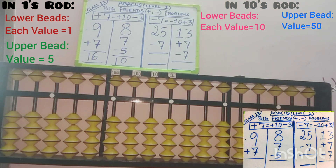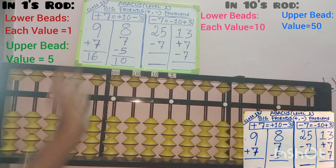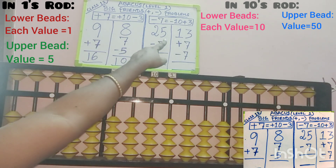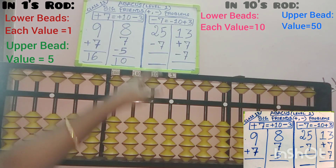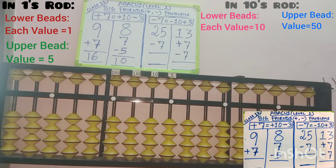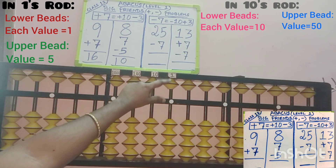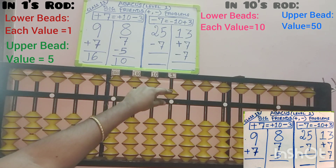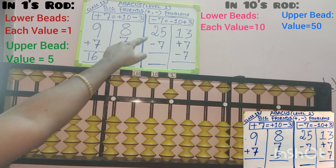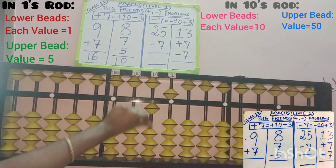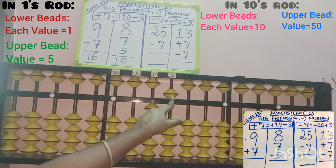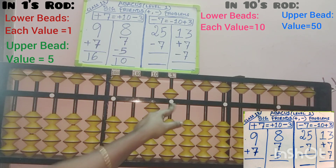Next, we will move to the subtraction part. Third sum is 25 minus 7. First, add 25 — 5 is in the 1s place and 2 is in the 10s place. Add 5 beads in the 1s place — its value is 5. In the 10s place, add 2 beads: 1, 2. So 25 is added.